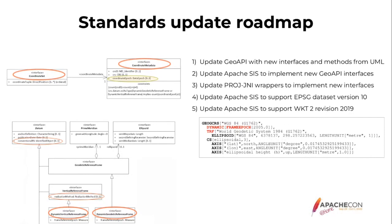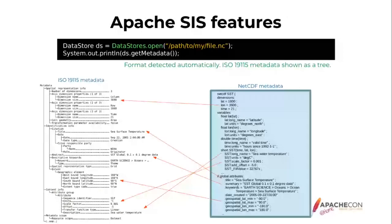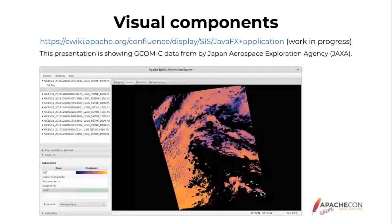Here is an example of a line of code for opening a file — in this case I just print the metadata. Every file format has a different way to organize metadata; for example NetCDF. Apache SIS uses ISO 19115 as its universal metadata format, so metadata from every other file format is converted to ISO 19115. Below is the API for doing that, and here is what it looks like in an application. We are starting to develop a JavaFX application — it is in a really early stage, but it gives an idea of what Apache SIS can do.